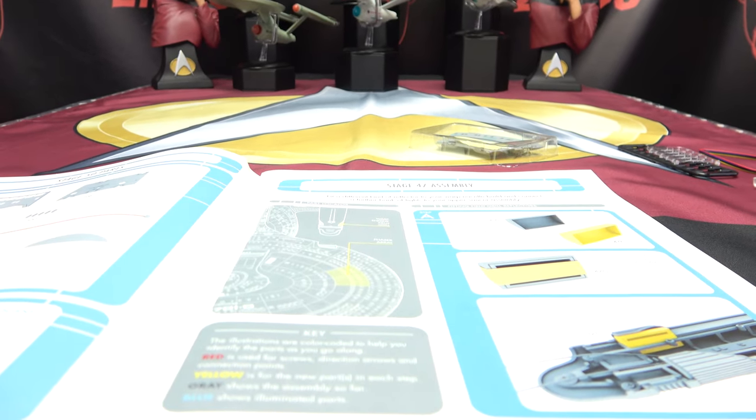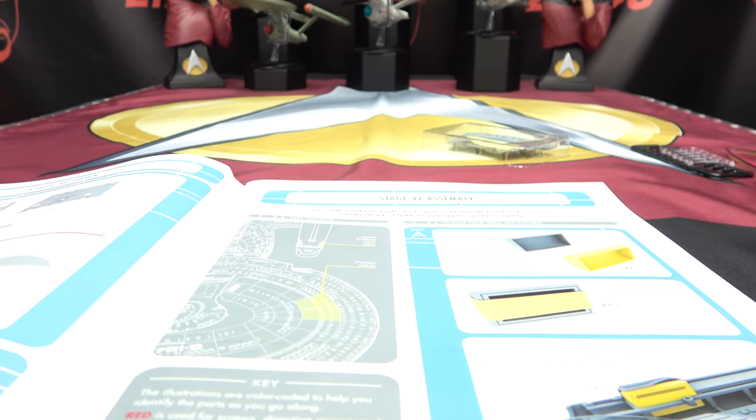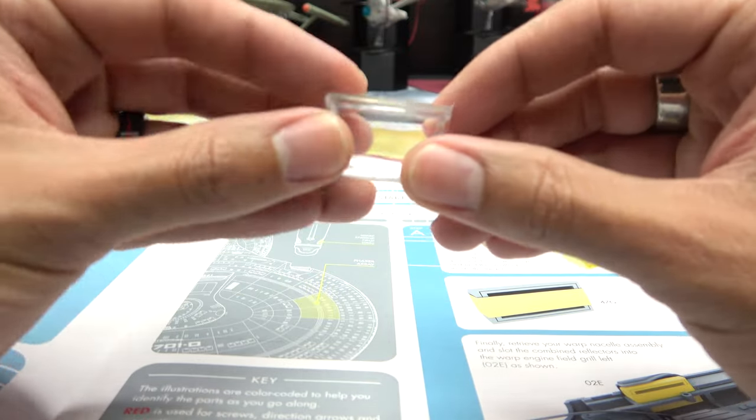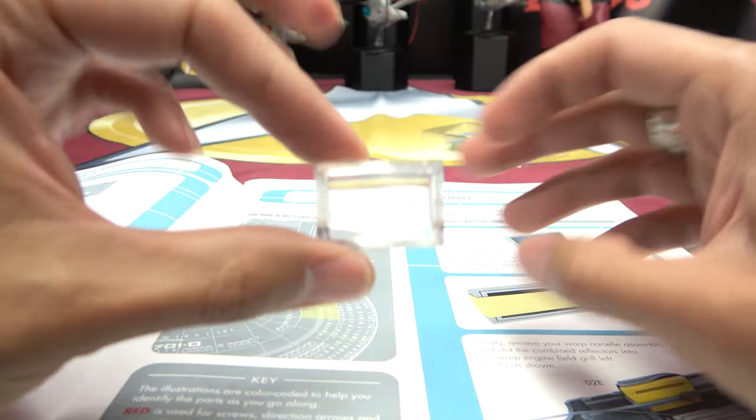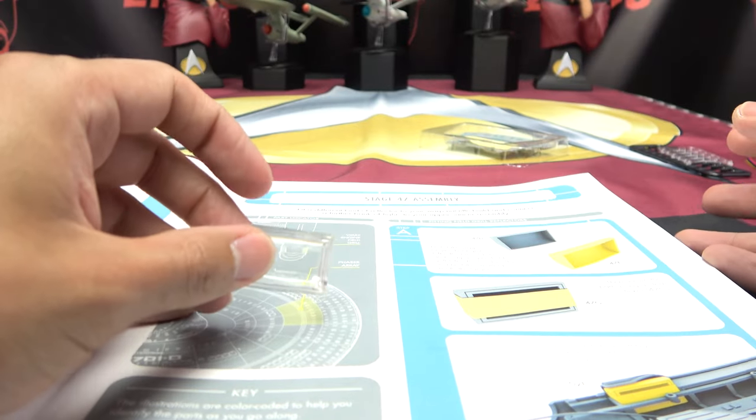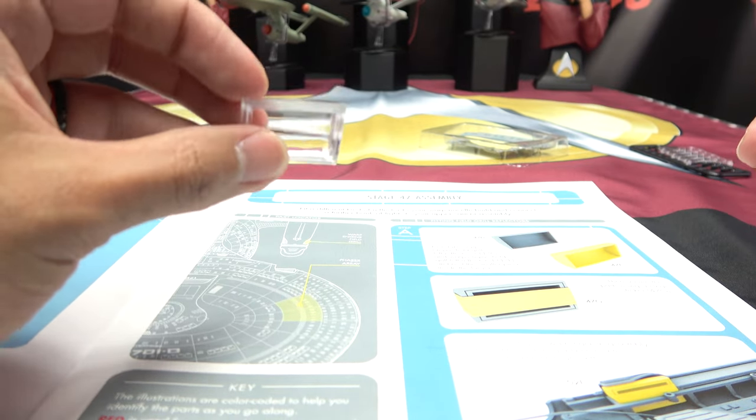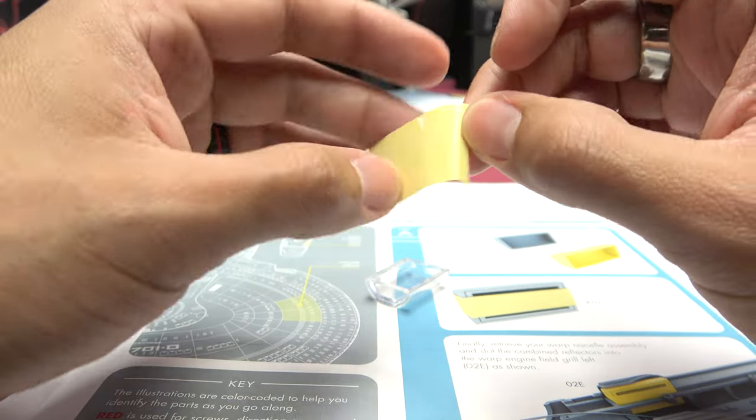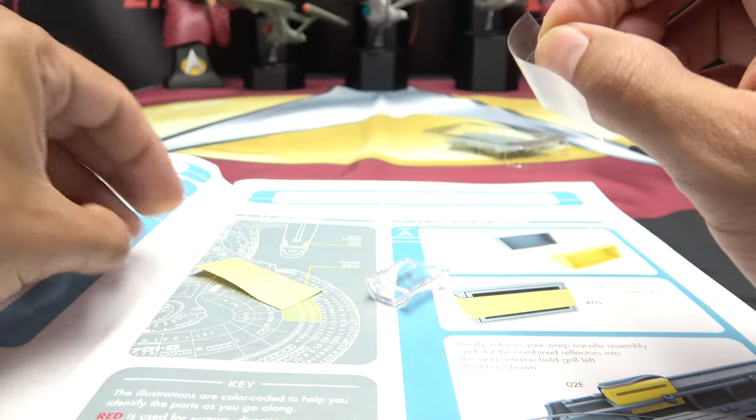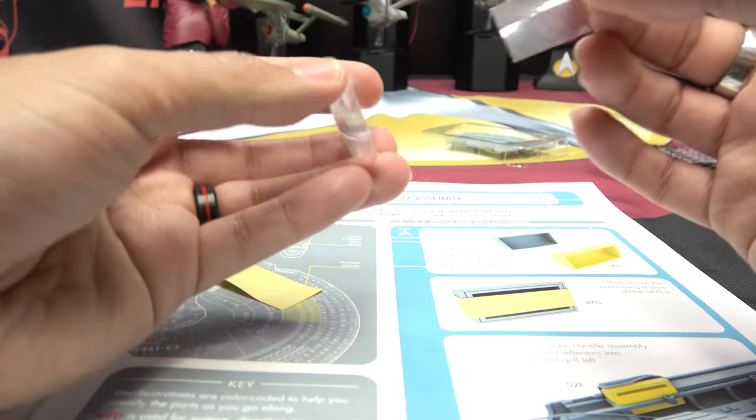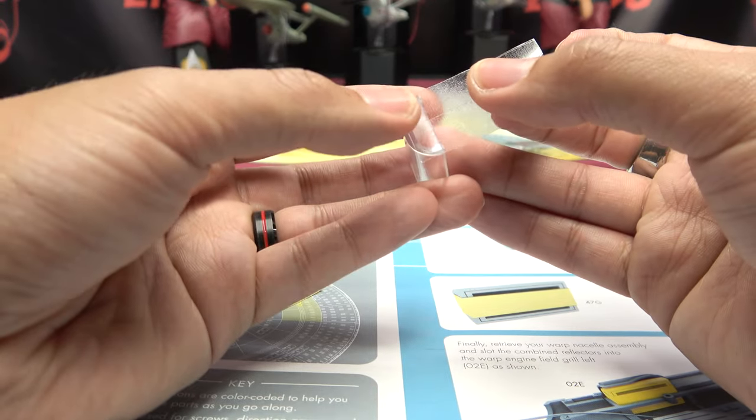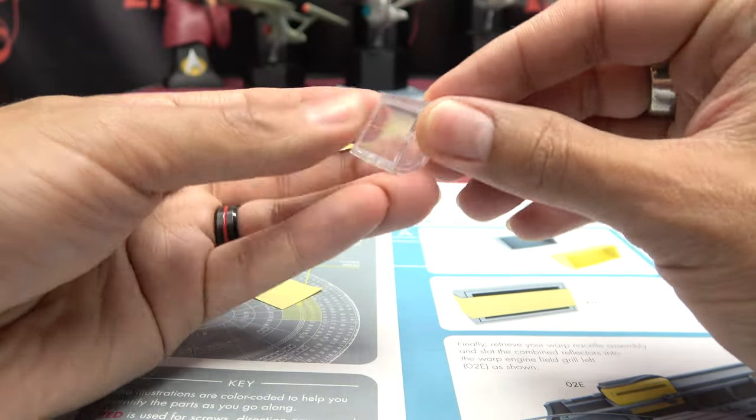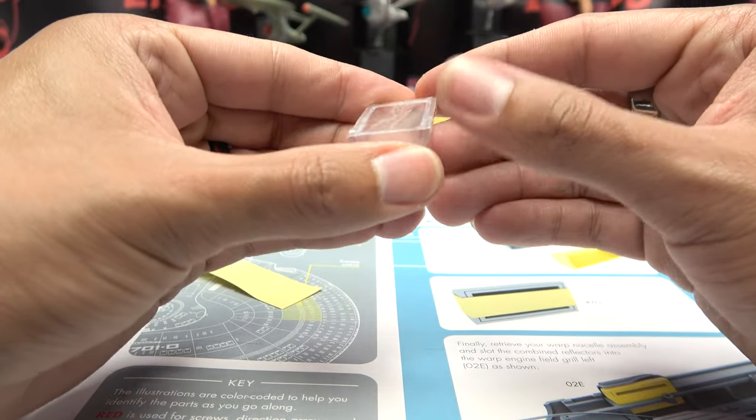So the first thing we're going to do, it looks like, is we're going to take these two clear pieces. And one will just sit inside the other. Like that. And okay. So once we have done that, we secure the parts using a clear sticker. Which I am assuming is this. Yes, that is a clear sticker. So let's peel that up. Peel. Peel. And we just wrap this on the side here. Like that. Bring that around. And there we go. That's what they want us to do. And that is what we have done.